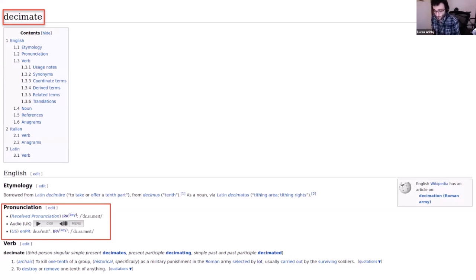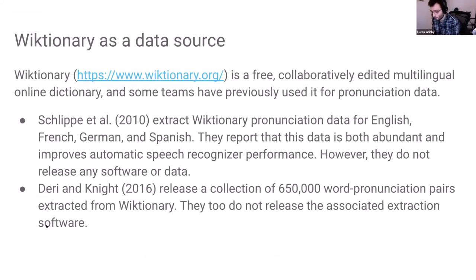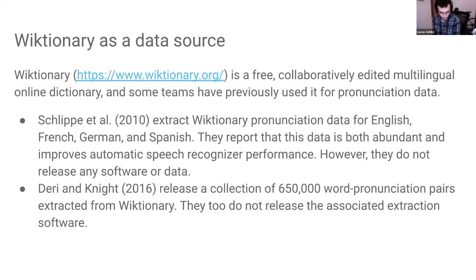Wikipron is a command line tool. You tell it what language you want to create a pronunciation dictionary of, and it goes to the English Wiktionary, takes this information, and returns it to your command line or to whatever output file you would like. We are not the first people to have come up with the idea of using Wiktionary as a data source. Schlippe et al. in 2010 and Derian Knight in 2016 did so, but neither approach released both the pronunciation data that was scraped and the software used to scrape it — that's something we wanted to do with Wikipron.